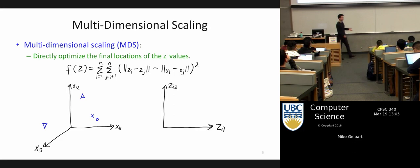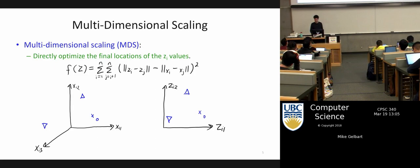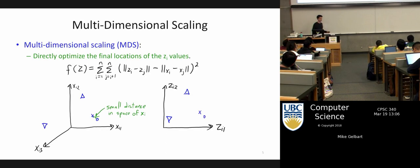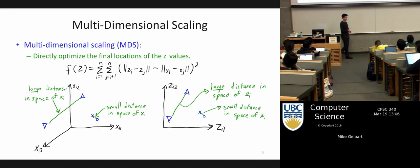For example, if D equals 3 — you start in three dimensions with four points — and you want to map those points into two dimensions, the question is whether this is a reasonable mapping. You can look at a distance that's small in the original space: if it's also small in the new space, that's good. In the original space it's small; in the new space it's small — and so on.